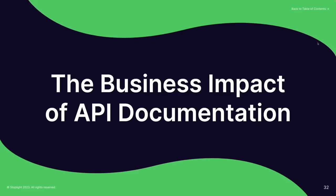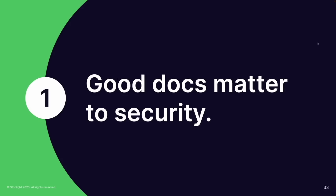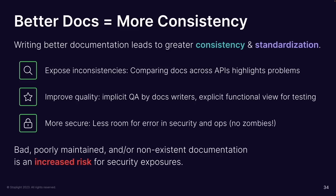Onto our second section: what's the business impact of investing in API documentation? Good docs matter to security — reviewing auth patterns, consistency, these sorts of things — and you're going to find security issues. Consistency is the name of the game: investing in docs shows where you have inconsistencies, and if you've got professional tech writers involved, they're going to see those inconsistencies clear as day.